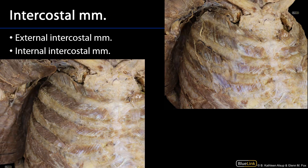Now the diaphragm is aided by many other muscles, far too many to discuss as part of this particular station. But there are two sets of intercostal muscles that you should see while you're here. There are external intercostal muscles, found in the intercostal space — the space between the ribs. The external intercostal muscles have their fibers running obliquely with the trailing edge going more inferiorly.